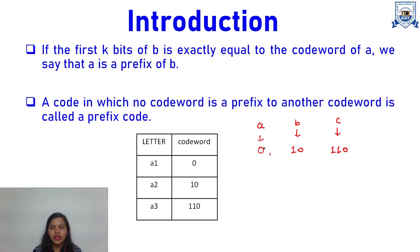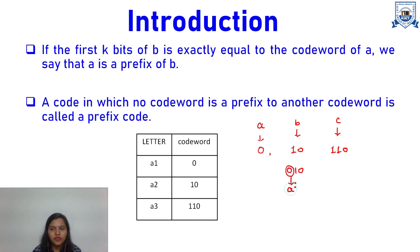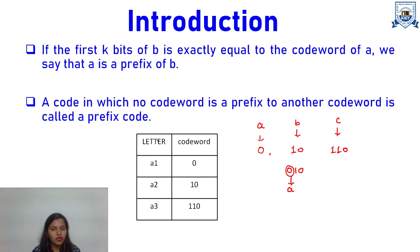Now we will check for a: is c starting from 0? No. So a is also not a prefix of c. Now if I have a code word like 0 1 0, you can see this code word is starting from 0, and 0 is for a — so a is completely contained in it. It means a is a prefix of b. So a code in which no code word is a prefix of another is called a prefix code.